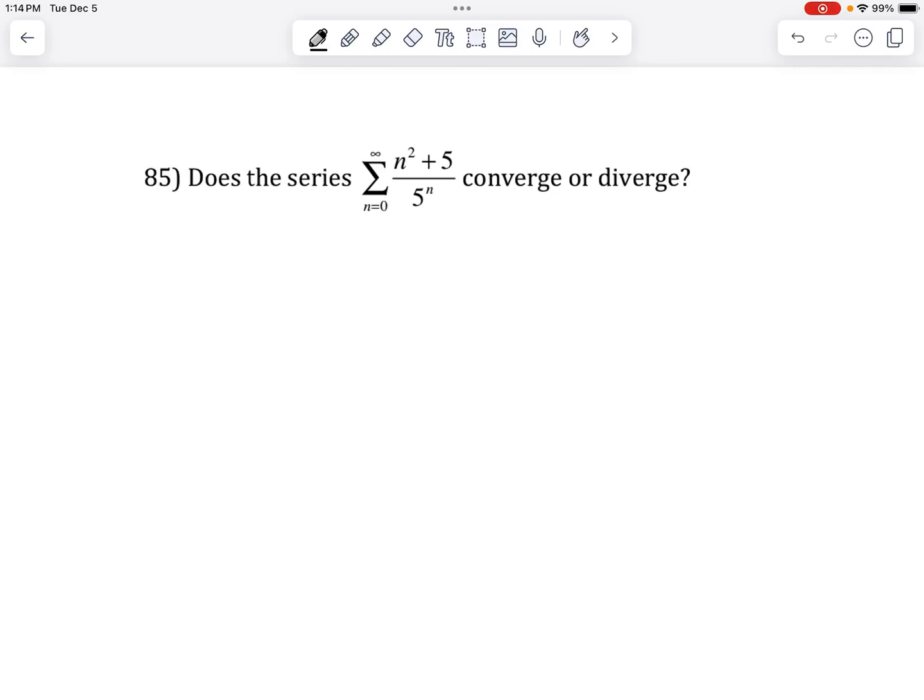Well, this series looks like it most likely converges, because on the top we basically only have an n squared, which is not that powerful. On the bottom, there's a 5 to the n, which is very powerful. So these should be very small fractions, and I think it's going to converge.